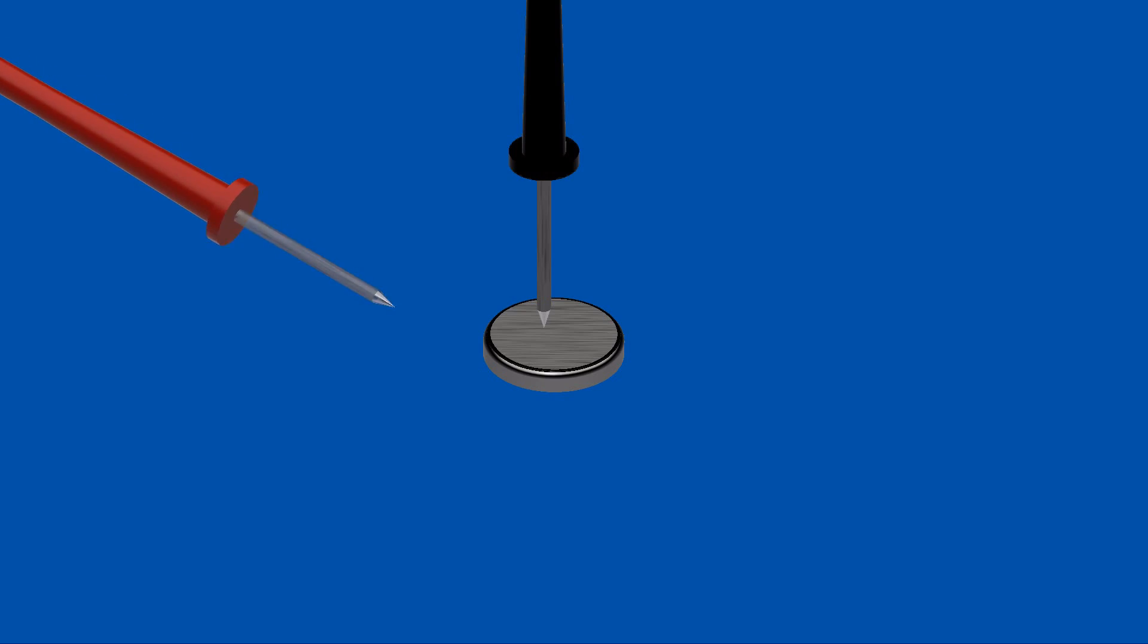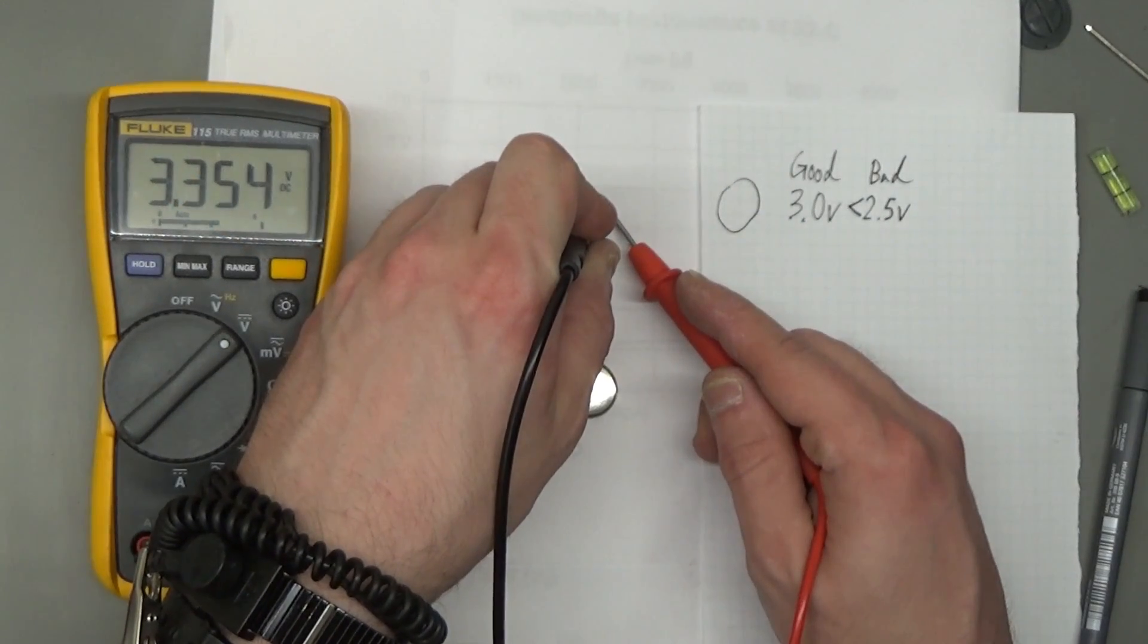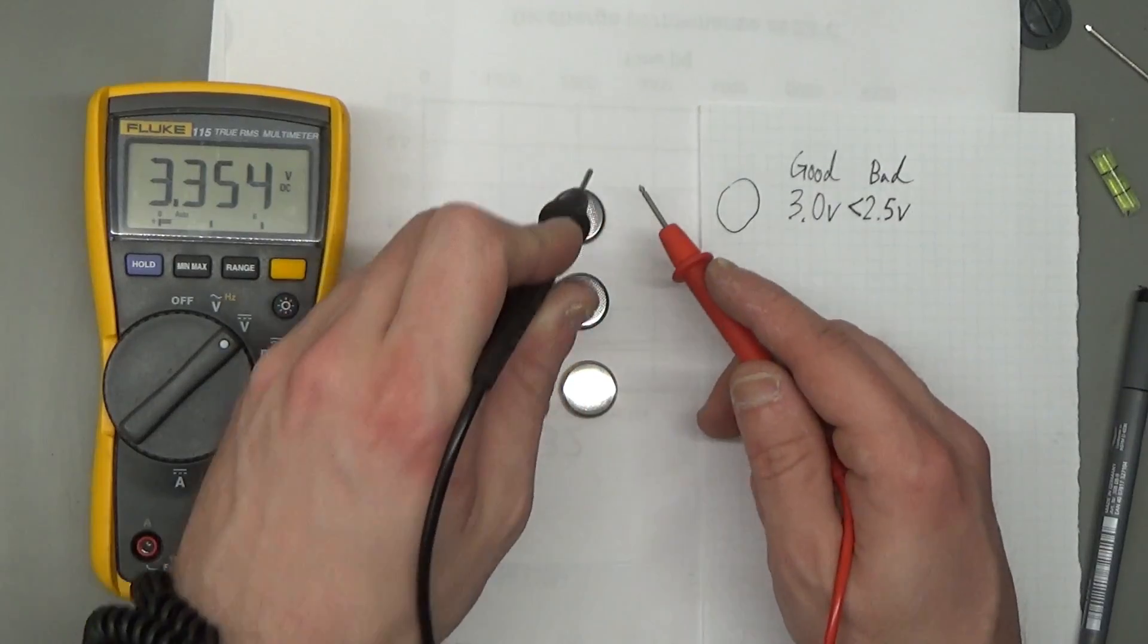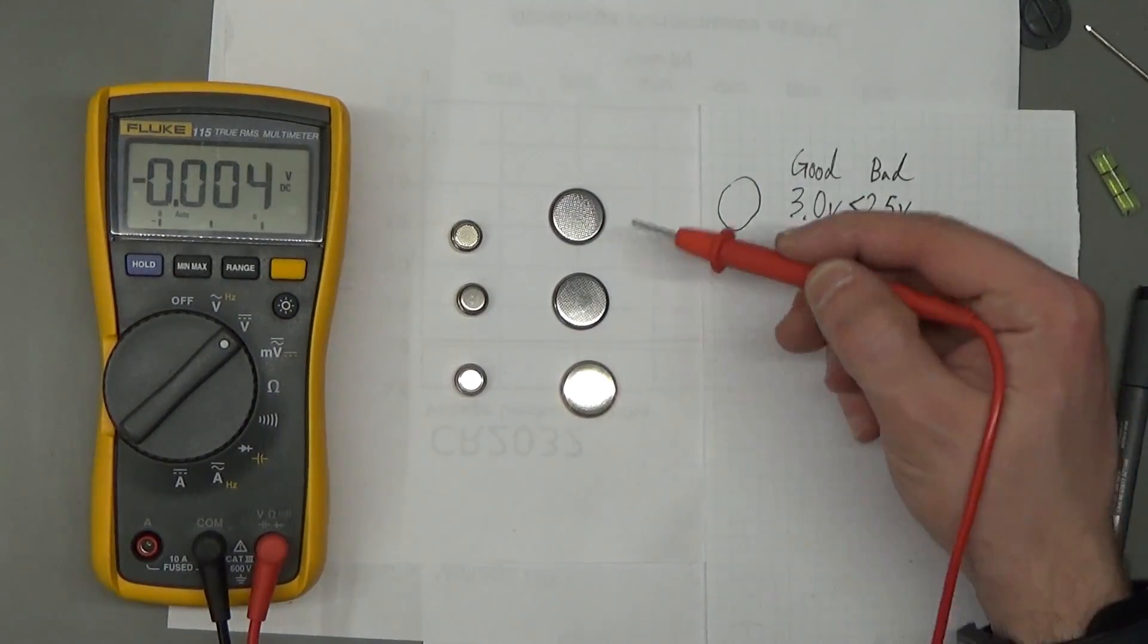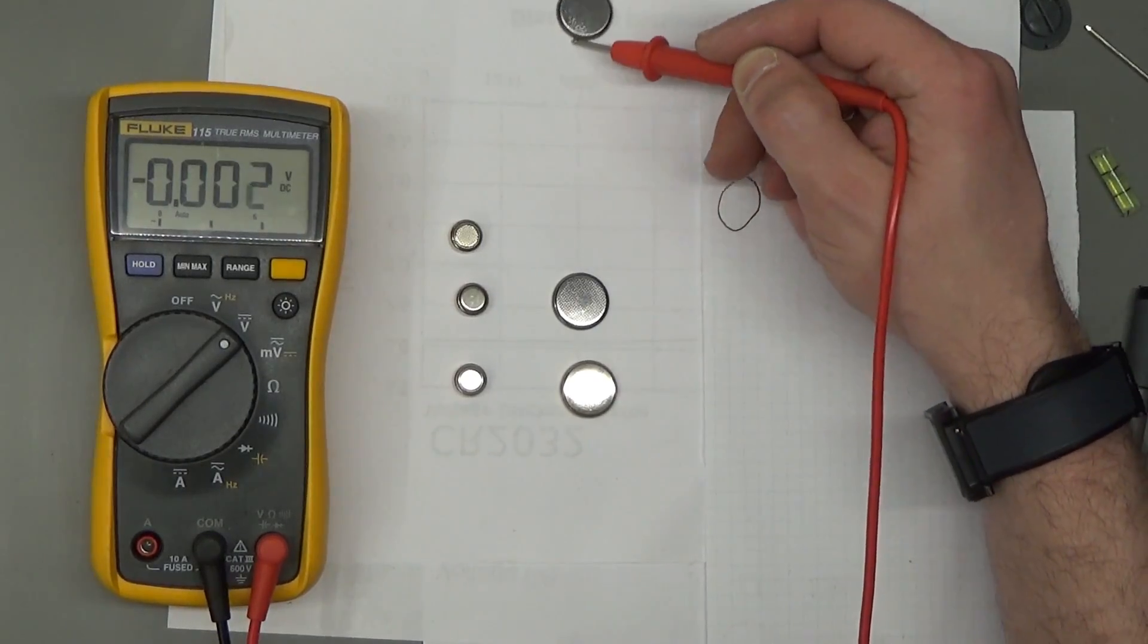Place the black lead in the center of the battery—this is with the battery marking down towards the table—and then take your red lead and place it on the side. So this battery measures 3.3 volts, so that is above the 3.0 volts for a good cell. That's definitely a good battery, probably never used.